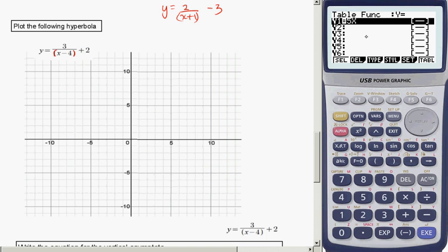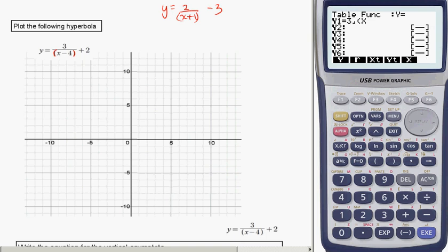Here I've already got an equation in there, so I'll delete it and type in that I want 3, and you can use the fraction button if you like, or you can use the divide button. I'll use the brackets, x, again always using the x underneath the red button, minus 4, bracket, and then plus 2.